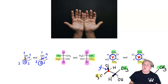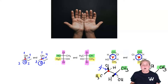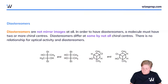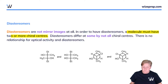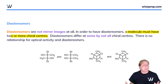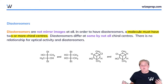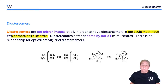Enantiomers are non-superimposable mirror images and are different at every single chiral carbon. Now let's talk about diastereomers, the other version of optical isomers. A diastereomer is not a mirror image at all. In order to have diastereomers, a molecule must have two or more chiral centers. Diastereomers differ at some but not all chiral centers. Diastereomers are almost a catch-all term — identical molecules are identical, enantiomers are different at all chiral centers, and diastereomers sit in the middle, different at some but not all.